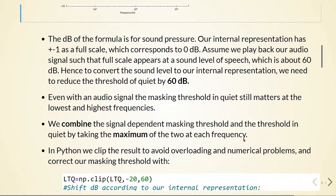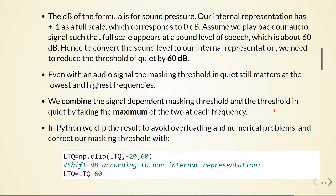Even with an audio signal, the masking threshold in quiet still matters at the lowest and the highest frequencies — we can see it here. We combine the signal-dependent masking threshold and the threshold in quiet by taking the maximum of the two at each frequency. So we will have the signal-dependent masking threshold, we also have the threshold in quiet, and we combine them by taking the maximum of the two at each frequency.